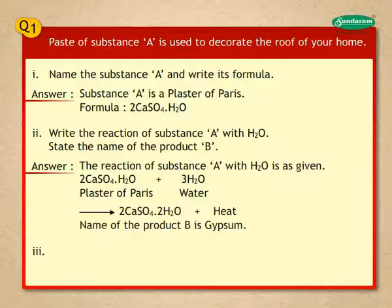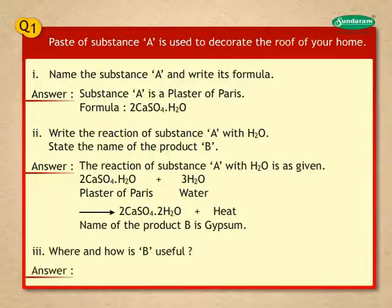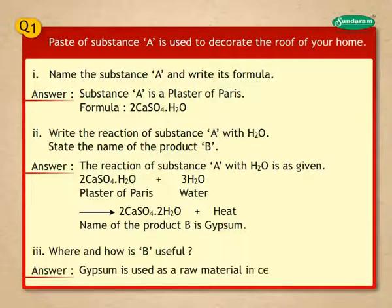Where and how is B useful? Answer: Gypsum is used as a raw material in cement industries.